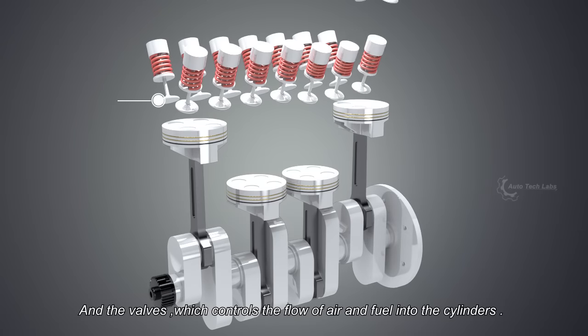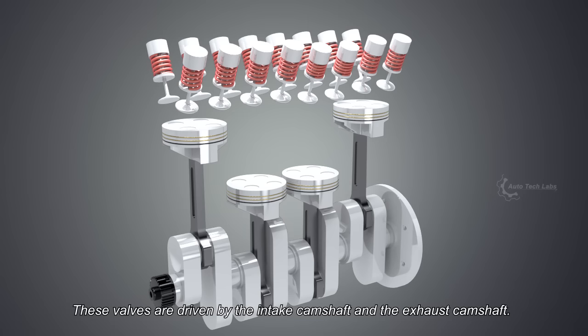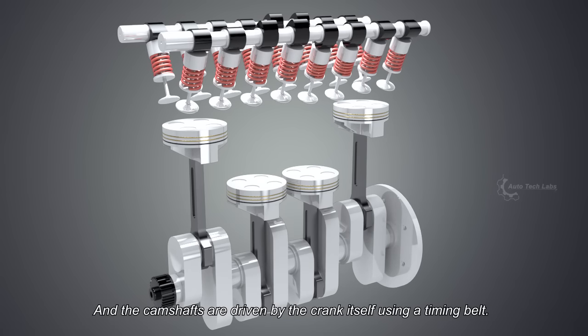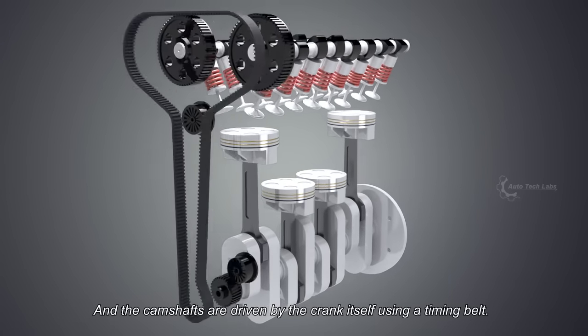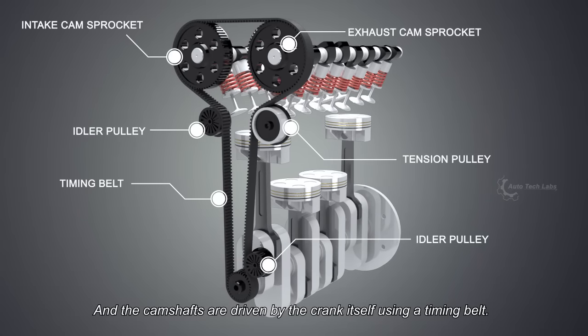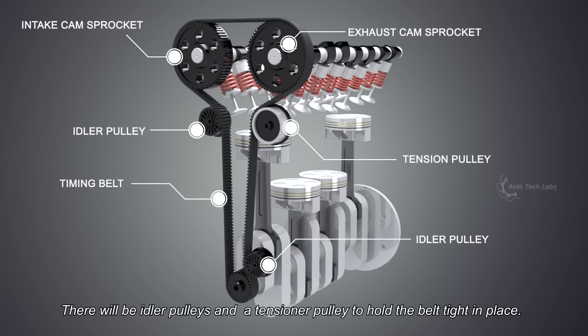And the valves, which control the flow of air and fuel into the cylinders. These valves are driven by the intake camshaft and the exhaust camshaft, and the camshafts are driven by the crank itself using a timing belt. There will be idle pulleys and a tensioner pulley to hold the belt tight in place.